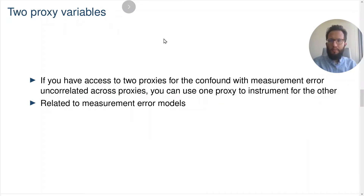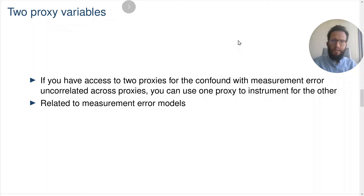Another approach you can use is a setup with two proxy variables. If you have access to two proxies for the confound, and the measurement error is uncorrelated across these proxies, you can use one proxy to instrument for the other in the regression. This approach is related to measurement error models. Coming back to the minimum wage example, say that you think that the underlying state of the economy is confounding the effect of the minimum wage on teenage unemployment, and you have access to the employment rate of two demographic groups that are not teenagers, and you think that those can help you measure the underlying state of the economy. Then you can include one of those employment rates and instrument it with the other employment rate to account for the effects of the confound.